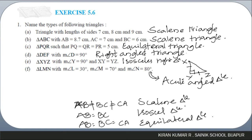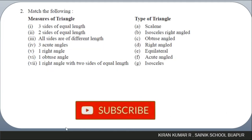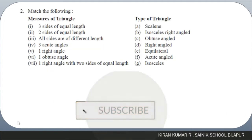In a right triangle, if the two non-right angles are both 45 degrees, it forms an isosceles right triangle. The next question is to match the following — the measure or property of a triangle matched to its type.